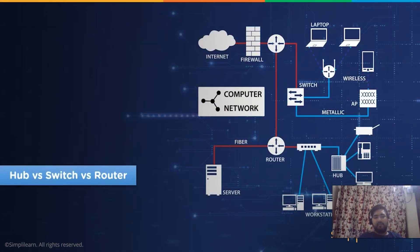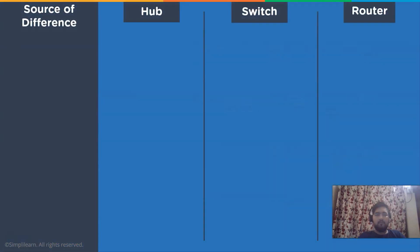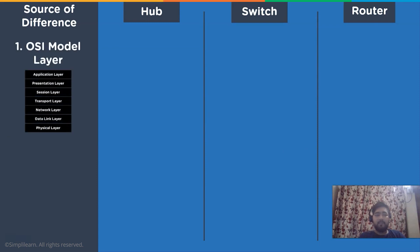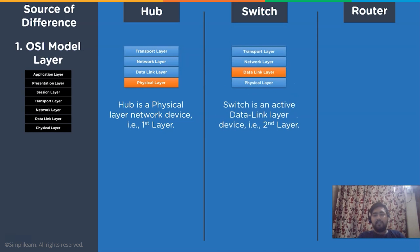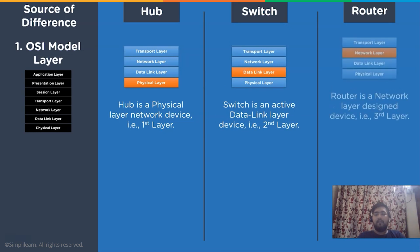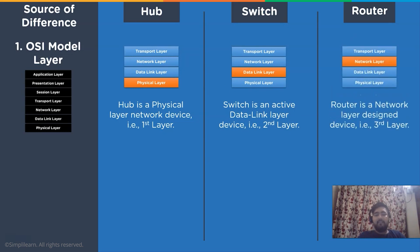Now let's move on to the last section — the difference between a network hub, switch, and a router. We will use different features to differentiate their working. The first difference is based upon the OSI model layer. A hub is active in the physical layer of the OSI model, also known as the first layer. A switch is active in the data link layer, also known as the second layer, whereas a network router is active in the network layer, also known as the third layer.